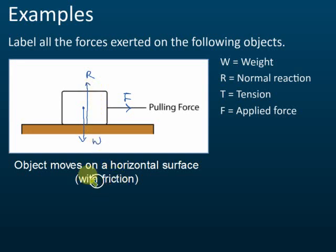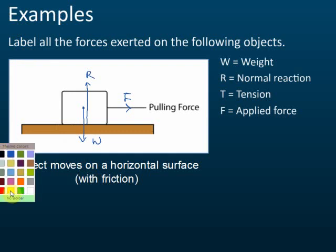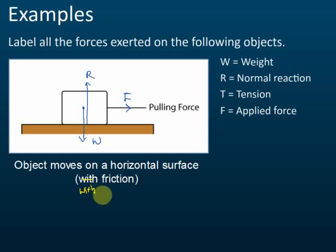The normal reaction is the pushing force — it pushes the object upwards. So for this first example, the forces acting on the object are: a pulling force to the right, weight acting downward from the center of gravity, and normal reaction pushing upward.